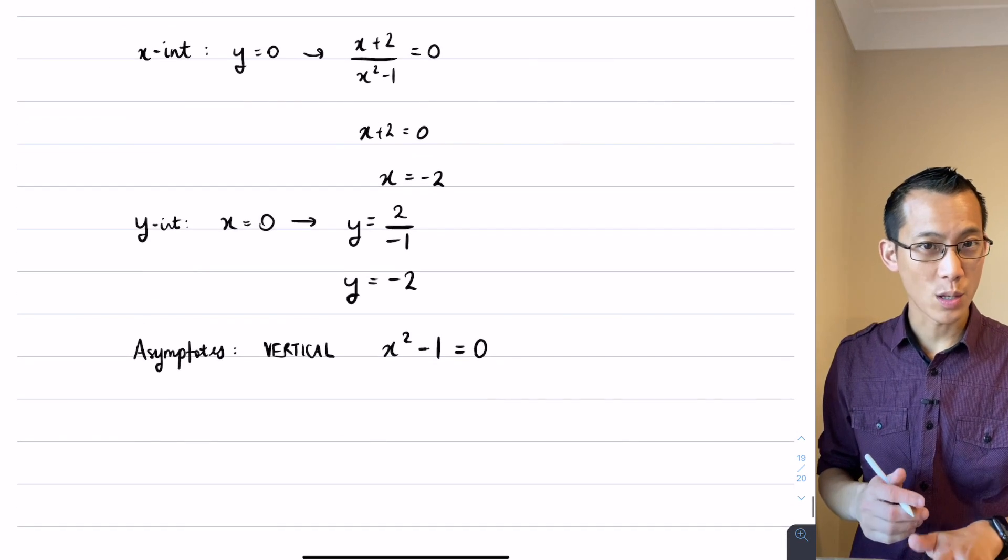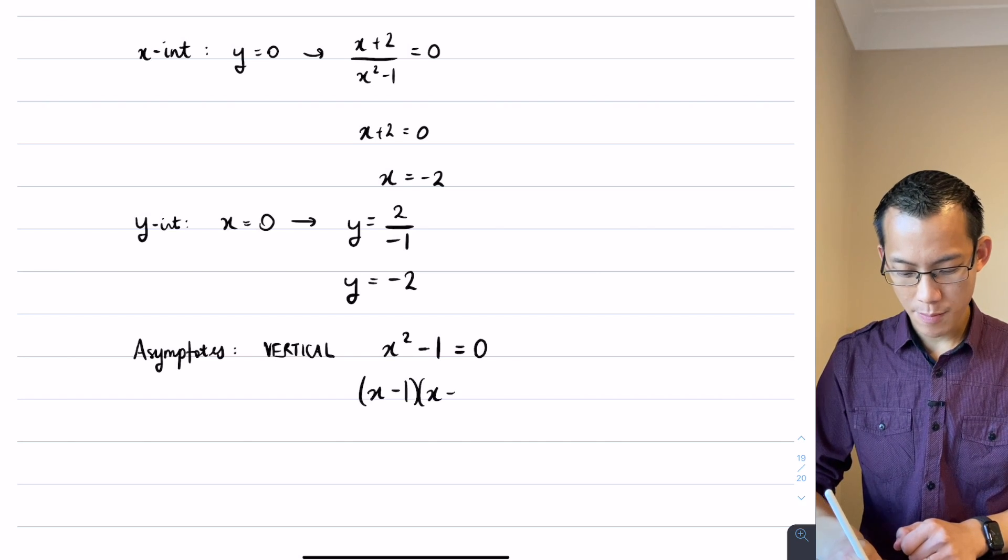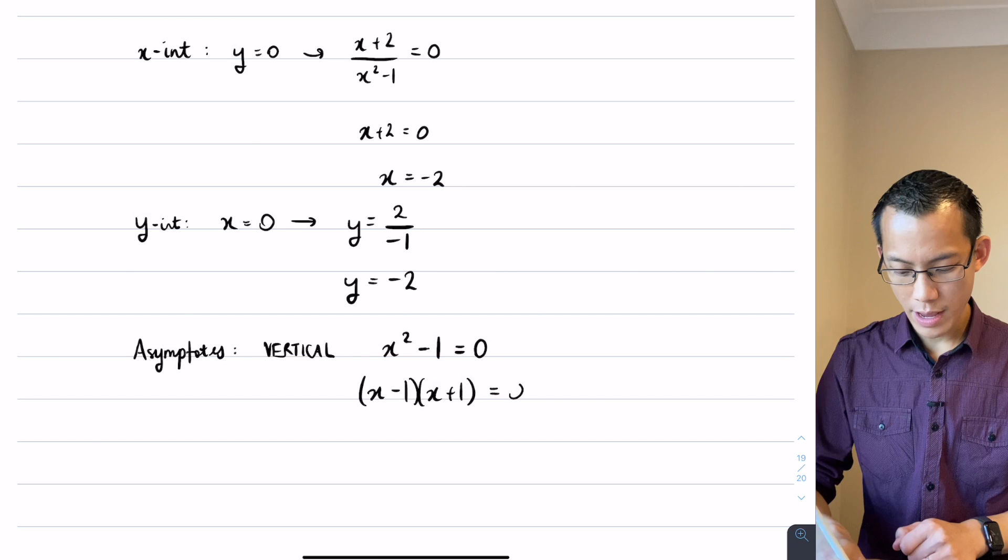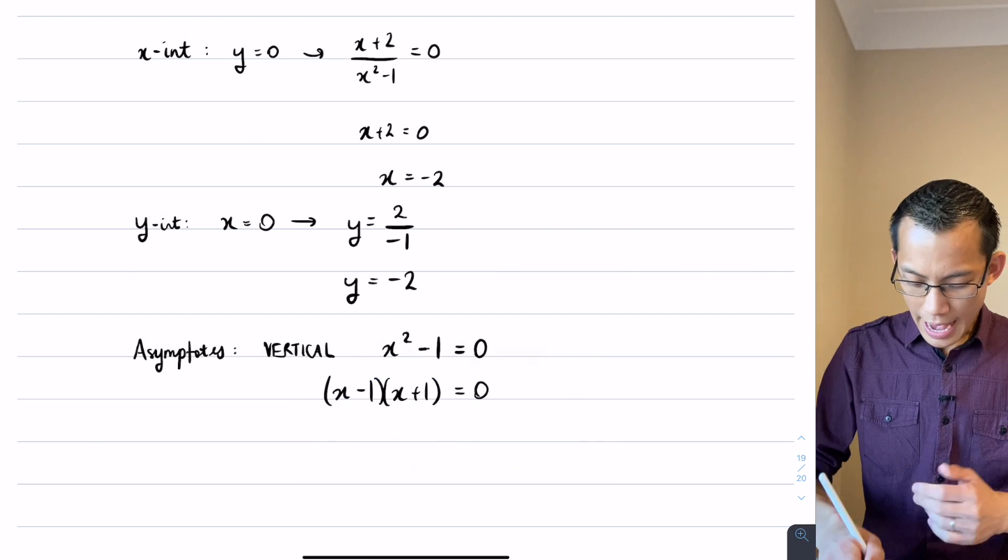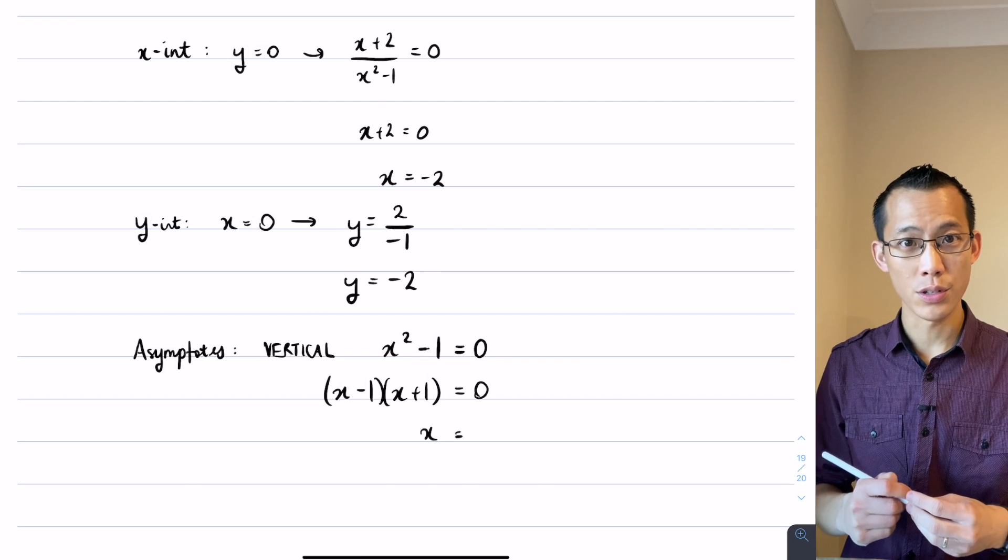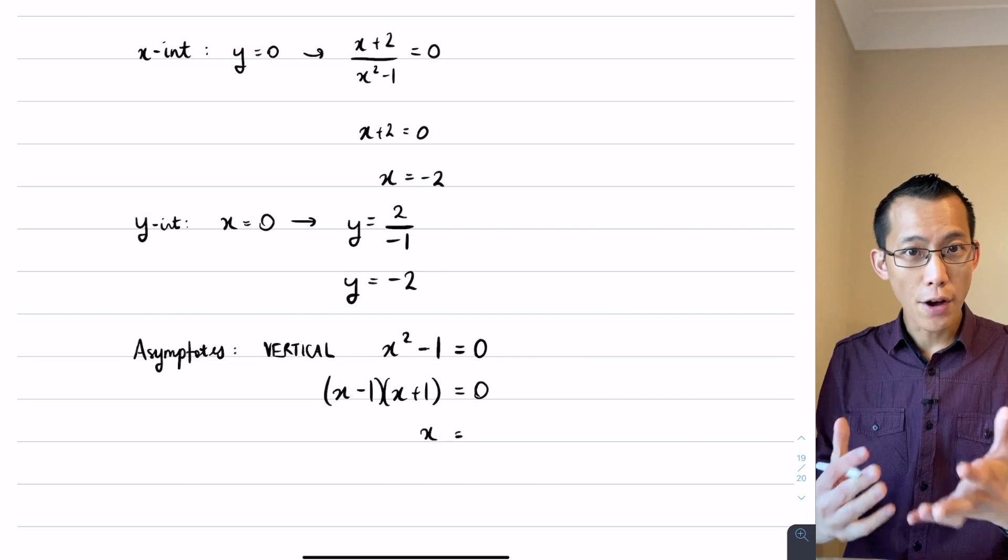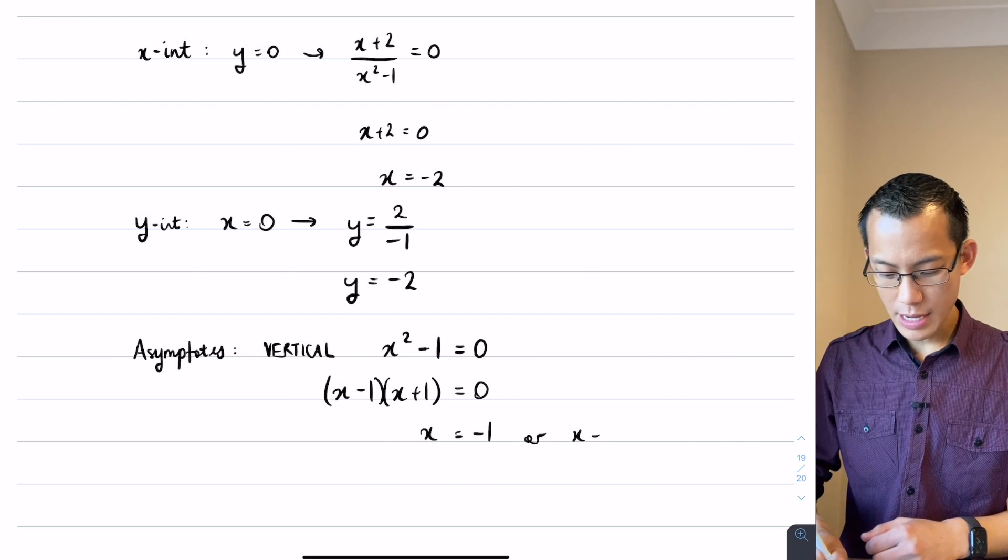So we can go ahead and we can solve this equation. You can see I can factorize on the left-hand side there because I've got difference of squares. This gives us not one but actually two different solutions, which means there are two vertical asymptotes: x equals negative 1 or x equals 1.